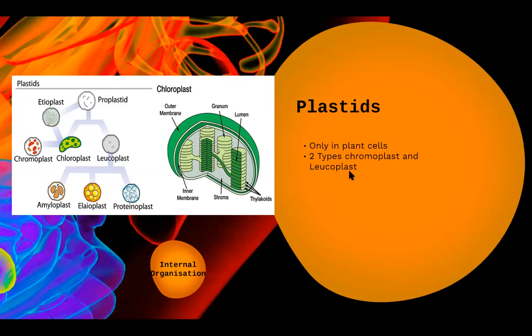There are three types of leukoplasts for storage of various materials: amyloplasts help in storage of starch, lioplasts help in storage of fat, and proteinoplasts help in storage of protein. These names are not mentioned in the NCERT; only the stored material is mentioned — leukoplasts help in storage of protein, starch, and fat.